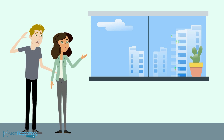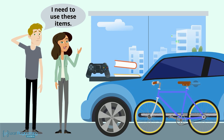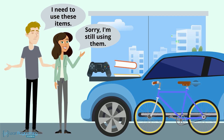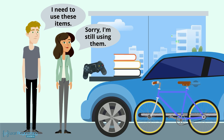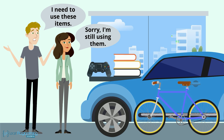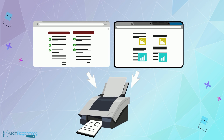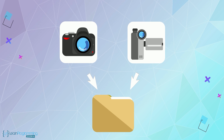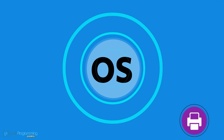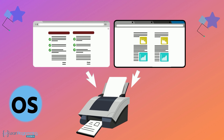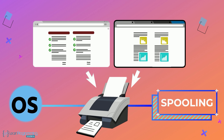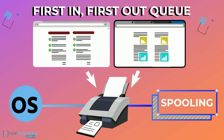Have you ever wanted to use a particular item — a bicycle, automobile, game controller, or a good book — and discovered that a friend or family member is using it? Both of you cannot use these items simultaneously. The same is true for computer resources. What if two apps want to direct output to a printer at the same time? Operating systems must manage this competition for resources. In the case of printing, the operating system uses a technique called spooling to put printer output in a first-in, first-out queue and then releases the output in sequential order.